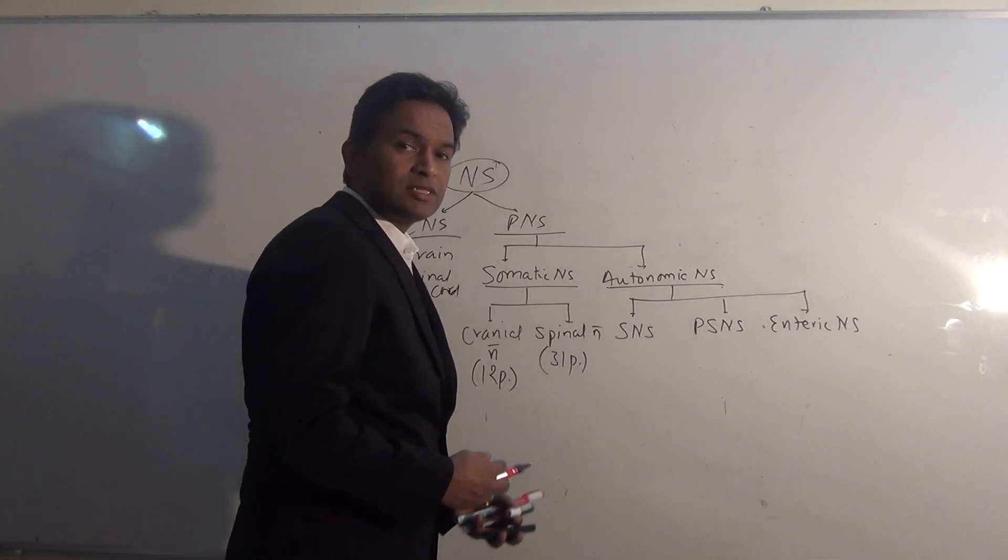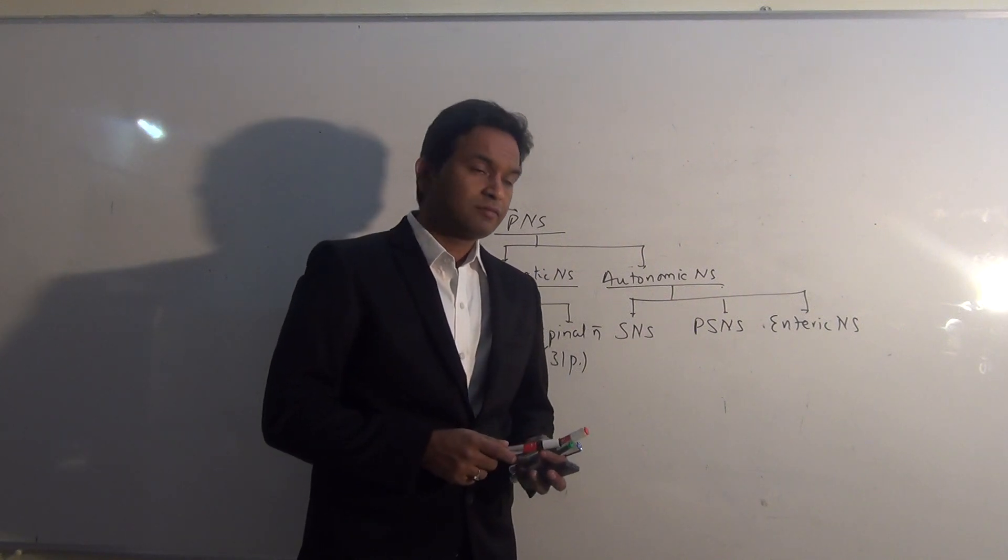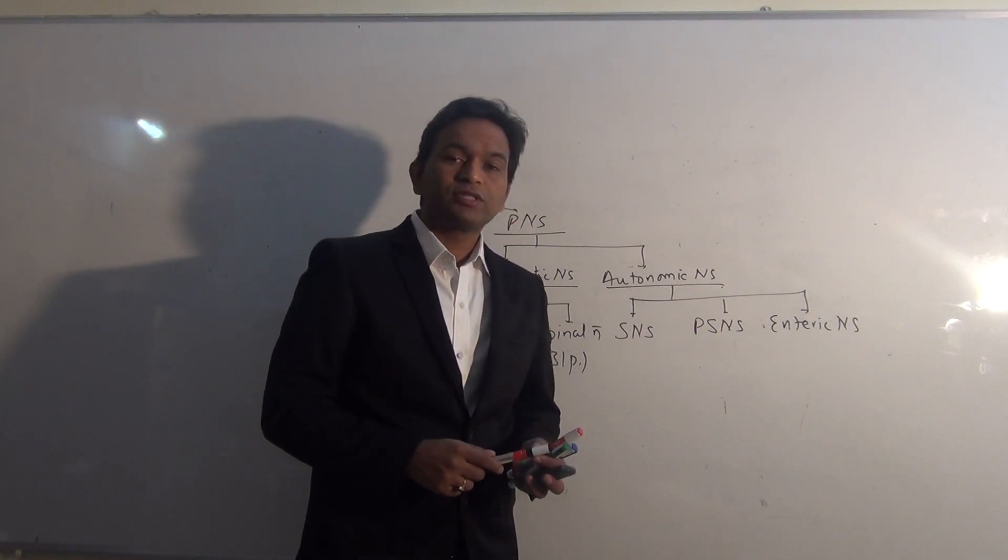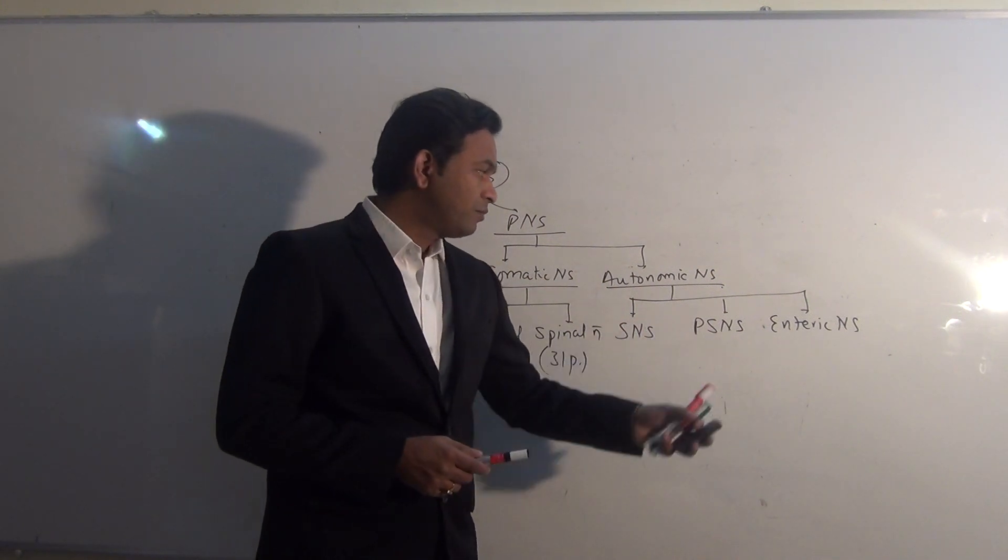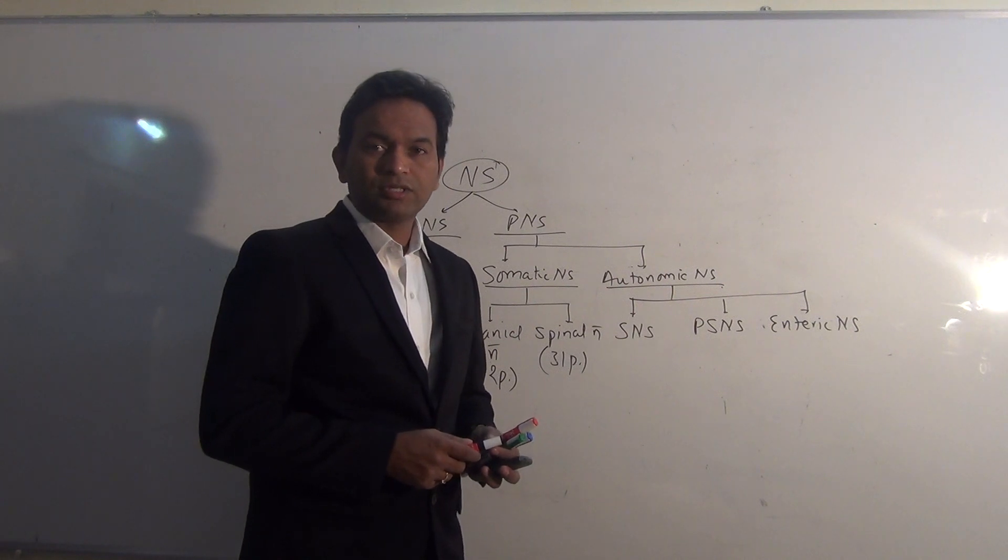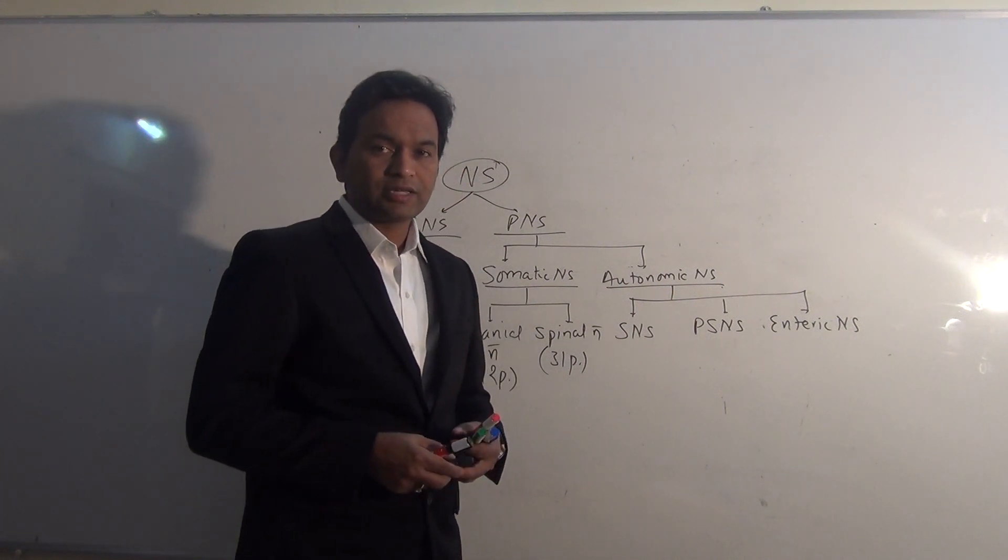Enteric nervous system is considered as second brain. It largely works independently. So it is also a point of discussion in autonomic nervous system. Although SNS and PSNS may influence the enteric nervous system, but how it will work that will be discussed in the later lectures.